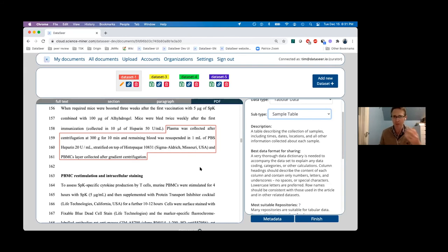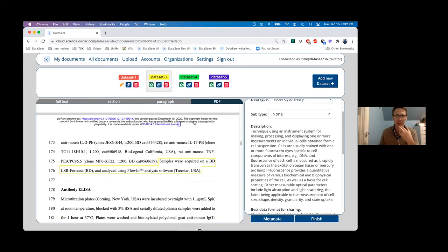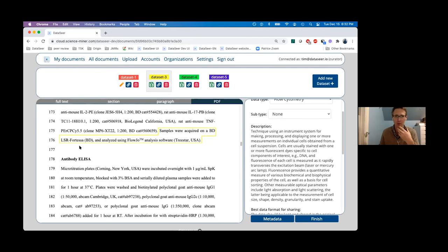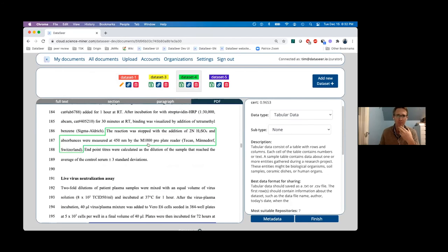And the next datasets down here, samples were acquired on a BD LSR Fortessa, analyzed with FlowJo analysis software. That is flow cytometry data being collected there.